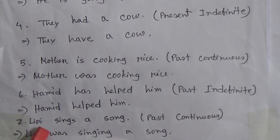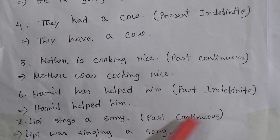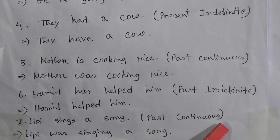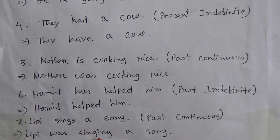Number seven: 'Lippy sings a song.' You have to change this sentence into past continuous tense. So you write: 'Lippy was singing a song.'